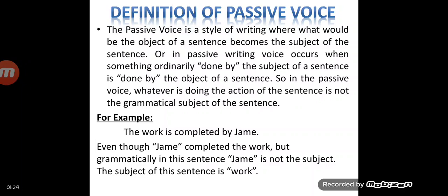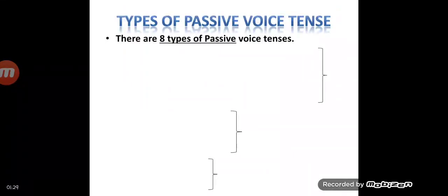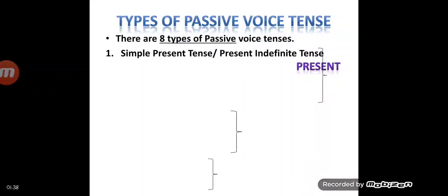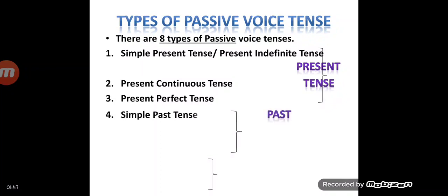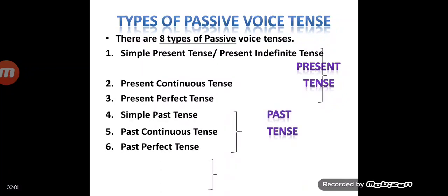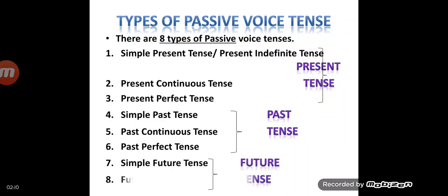We have learned that there are 12 types of active voice tenses, but we have only eight types of tenses in passive voice. There are only three types in present tenses: simple present, present continuous, and present perfect tense. Similarly, for past tenses there are only three: past simple, past continuous, and past perfect. For future tenses, we can only make two passive tenses — simple future and future perfect — because we cannot change future continuous and future perfect continuous into passive voice. That is why we have only eight types of passive voice tenses.